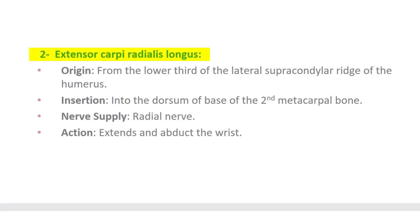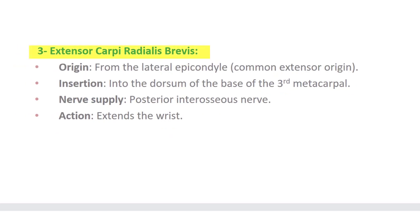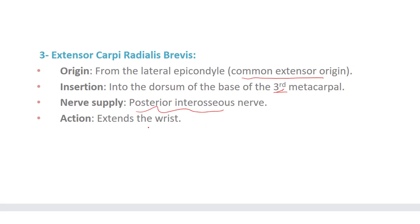Extensor carpi radialis longus takes origin from the lower third of the lateral supracondylar ridge of the humerus; insertion into the dorsum of the base of the second metacarpal bone. Nerve supply from the radial nerve; action extends and abducts the wrist joint. Extensor carpi radialis brevis takes origin from the lateral epicondyle, or common extensor origin; insertion into the dorsum of the base of the third metacarpal bone. Nerve supply from the posterior interosseous nerve, which is the deep branch of the radial nerve; action extends the wrist joint.